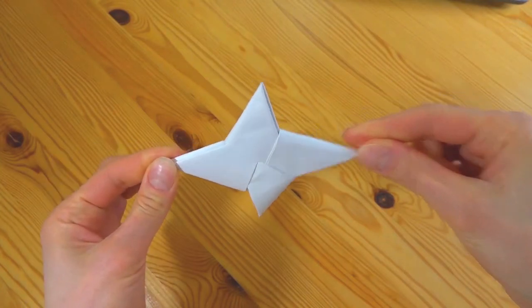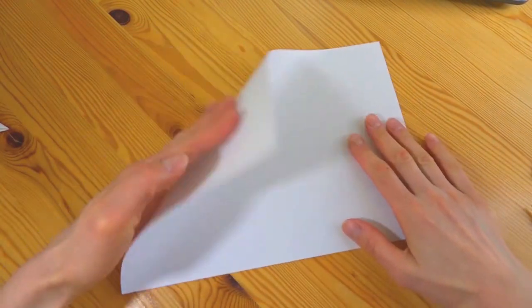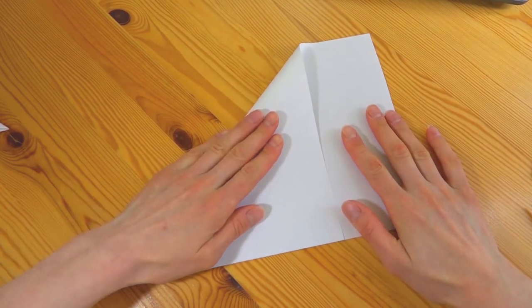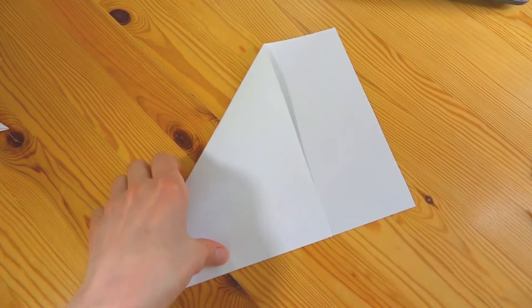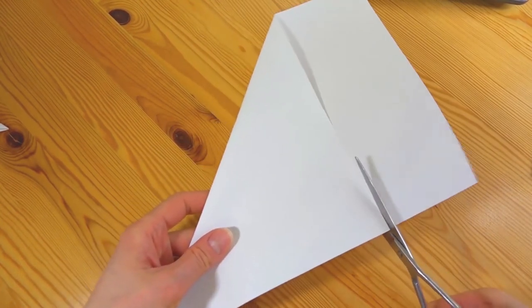Hey everyone, today we're going to make a wonderful ninja star. For this we will need square sheets of paper. To do this we have to fold them like that. This part will be extra, we can tear it off or cut it off.